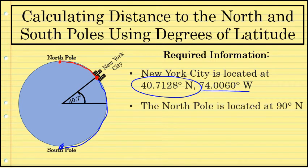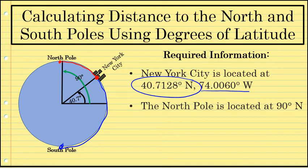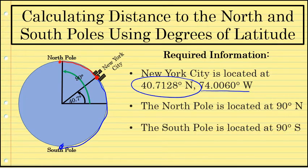The North Pole is, of course, going to be 90 degrees north. The angle between the equator and the North Pole is 90 degrees. And the South Pole as well — that angle is 90 degrees. The latitude of the South Pole is 90 degrees south.